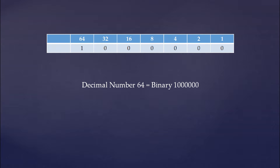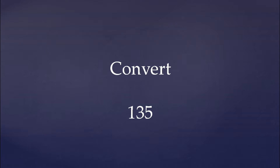Now let's take one that is a little more challenging. Let's convert the decimal number 135 into binary. Once again we're going to start by finding our binary place values. You may be asking how many place values we need. The answer is we need the highest place value that is not larger than the number we are trying to convert.